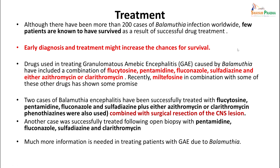Treatment: although more than 200 cases have been detected worldwide, very few patients have survived. Early diagnosis and treatment are most important for increasing chances of survival. Drugs used for granulomatous amoebic encephalitis caused by Balamuthia include a combination of flucytosine, pentamidine, fluconazole, sulfadiazine, azithromycin or clarithromycin. Recently, miltefosine has also been used. Two cases have been successfully treated with these drugs combined with surgical resection of the CNS lesion. Another case was treated with pentamidine, fluconazole, sulfadiazine, and clarithromycin, but much more information is needed.